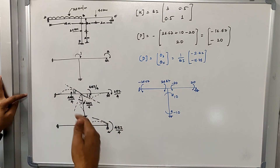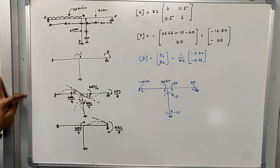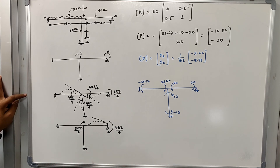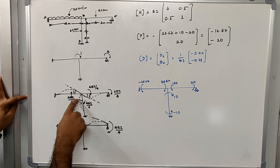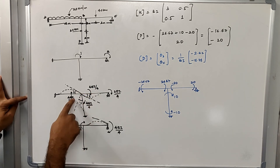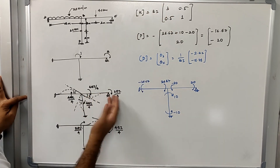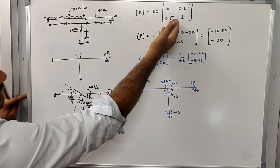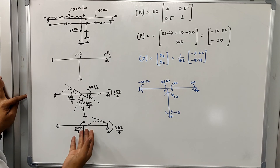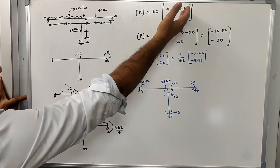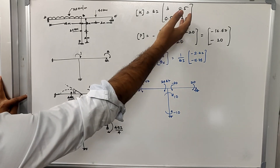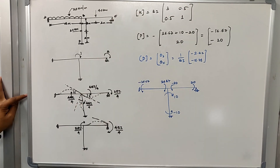Formulating the stiffness matrix: K11 = 3EI (three members each contributing 4EI/4), K21 = 0.5EI (2EI/4), K12 = 0.5EI, and K22 = EI (4EI/4 = 1 after factoring EI). The fixed ends at A and D are not coordinates, so those carry-over moments are not included in the matrix.